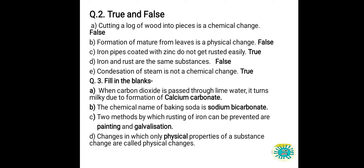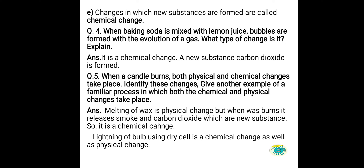Part C: two methods by which rusting of iron can be prevented are painting and galvanization. Part D: changes in which only the physical properties of a substance are changed are called physical changes. Part E: changes in which new substances are formed are called chemical changes.